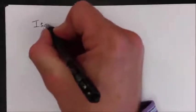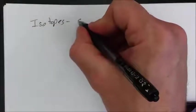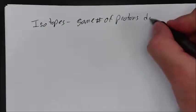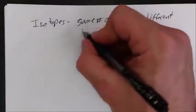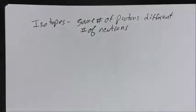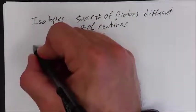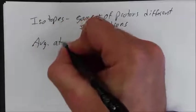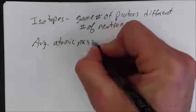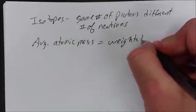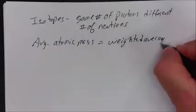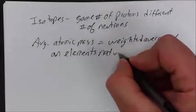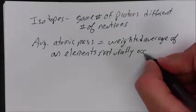Last thing we're going to talk about are isotopes. Definition of an isotope: it's the same element, so it has the same number of protons, different number of neutrons. And finally, the atomic mass you see on the periodic table is the average atomic mass, which is a weighted average of an element's naturally occurring isotopes.